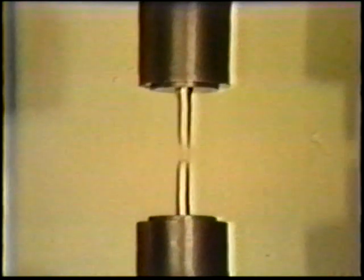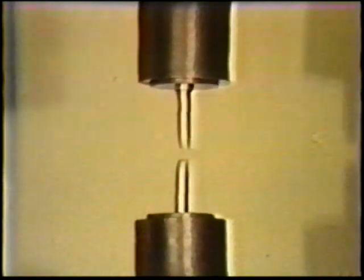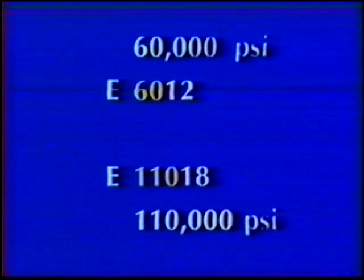The reason for using both four and five digit numbers is that part of the number indicates the tensile strength of the weld metal produced by a particular electrode. In the four digit number, the 60 indicates a minimum tensile strength of 60,000 pounds per square inch. The 110 in the five digit number indicates 110,000 pounds per square inch. The letter E indicates electrode and is used with all numbers.